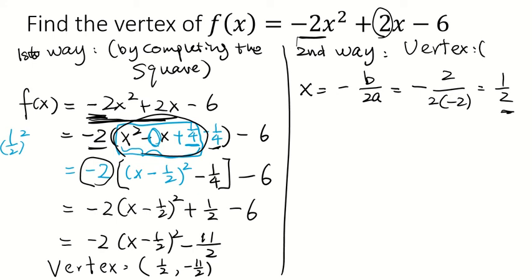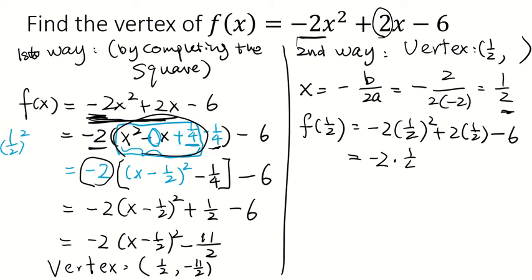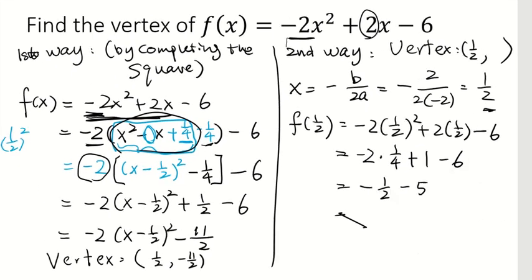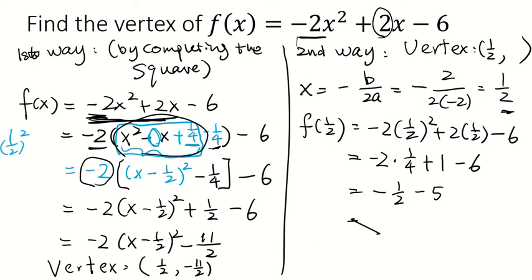How do we find the y coordinate? Plug it back into the function. f of 1 half equals negative 2 times 1 half squared plus 2 times 1 half minus 6. This will give you negative 2 times 1 fourth plus 1 minus 6, which is negative 1 half minus 5. This will give you negative 11 over 2.